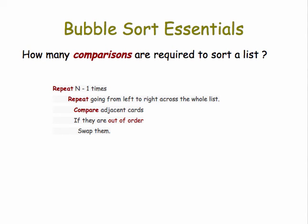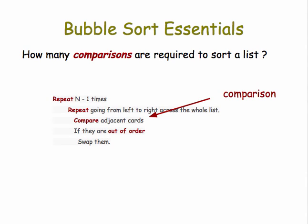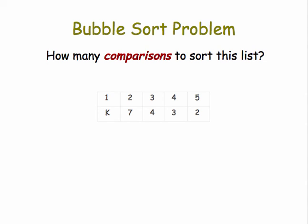We'll look at this pseudocode version of the algorithm. We're going to repeat n minus 1 times the following loop: repeat going from left to right across the whole list of numbers, comparing adjacent cards or numbers. If they're out of order, we're going to swap them. The comparison comes into the statement where you are comparing adjacent cards. So let's take a step-by-step look through a simple case where we have five cards and they're in the wrong order, the exact opposite order, which happens to be the worst case for the bubble sort.